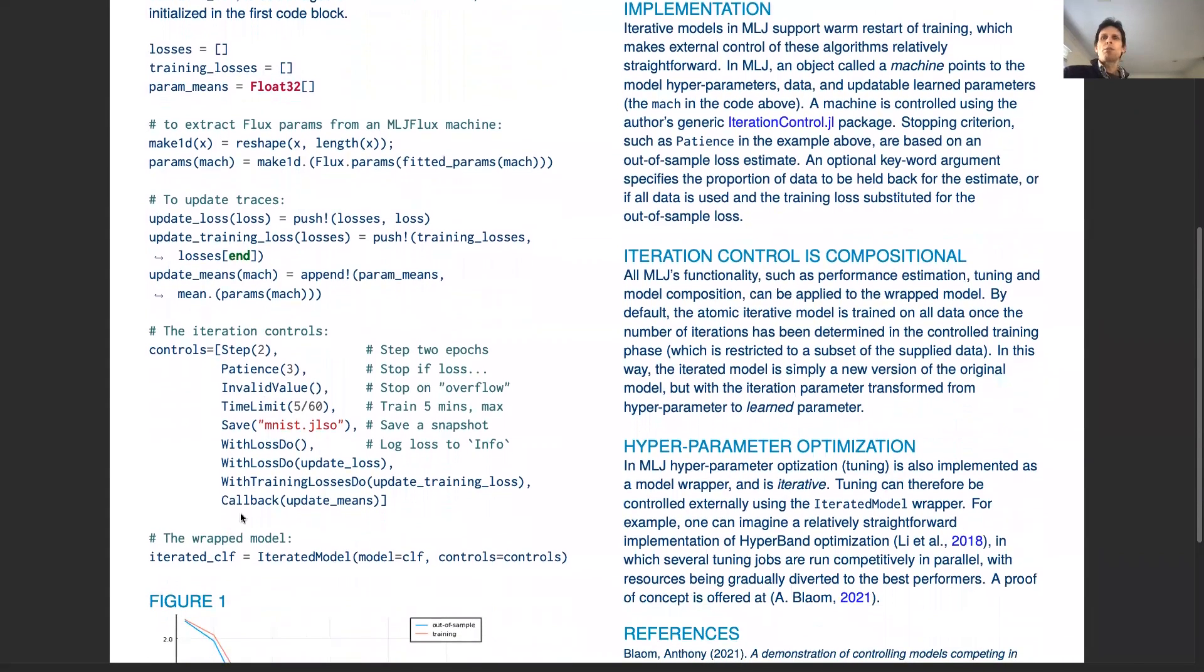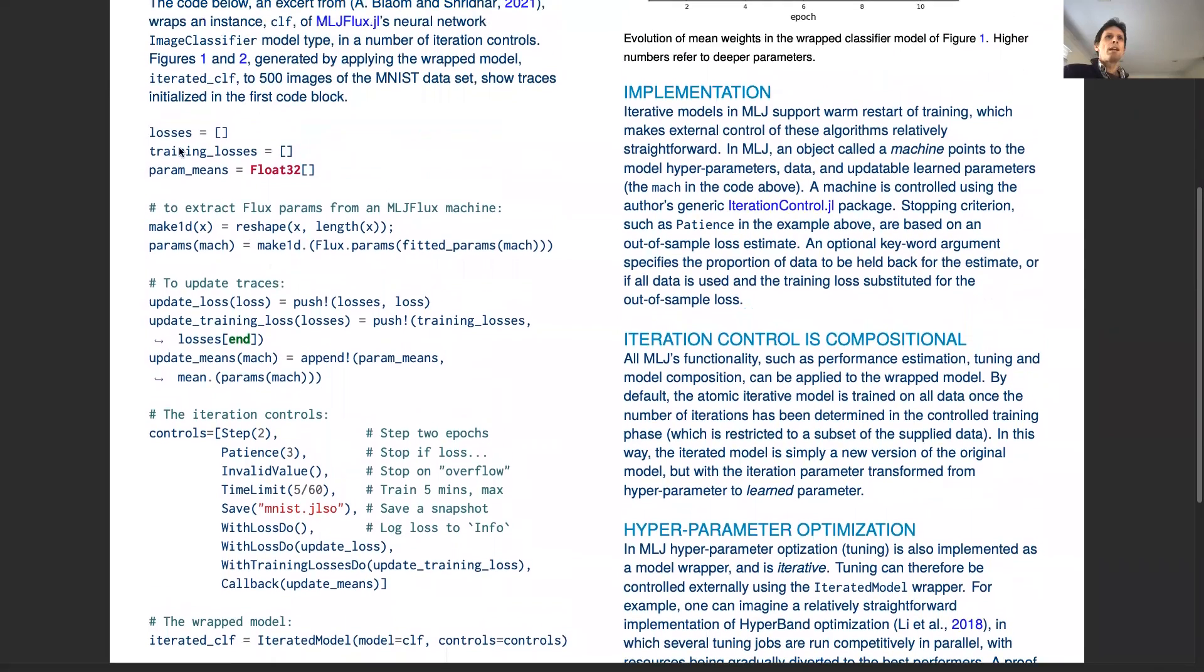The example demonstrated in the poster is an application to an image classifier from Flux. In the controls, we include things to update a bunch of traces initiated at the top of the code.